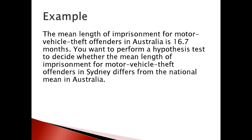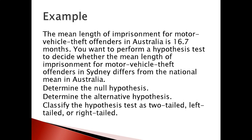Here is an example. The mean length of imprisonment for motor vehicle theft offenders in Australia is 16.7 months — that's our given information, so we consider that as μ₀. We want to perform a hypothesis test to decide whether the mean length of imprisonment for motor vehicle theft offenders in Sydney differs from the national mean in Australia. Determine the null hypothesis, alternative hypothesis, and classify the type of hypothesis.